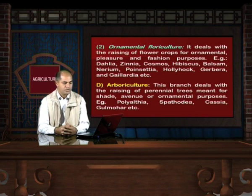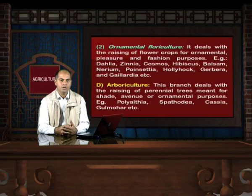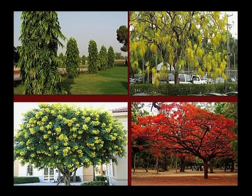Arboriculture is the branch of horticulture that deals with the raising of perennial trees meant for shade, avenue, or ornamental purposes. Examples are Polyalthia, Spathodea, Gulmohar, etc. As seen in this picture, four types of perennial trees used as ornamental plants are shown — the first is Polyalthia longifolia, commonly called Ashok, and the other three varieties are various colors of Gulmohar trees.